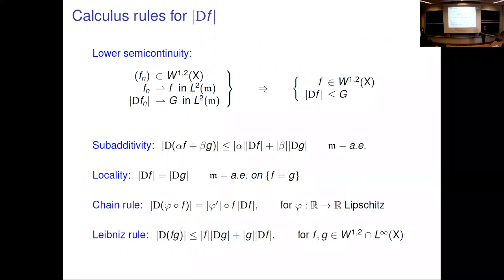The choice p=2 plays no special role; you can do the same for any p strictly between 1 and infinity. p=1 is actually delicate and leads to the theory of BV functions, pioneered by Miranda in the metric measure setting, but I will not discuss that case.